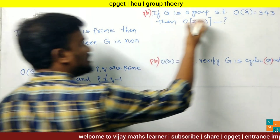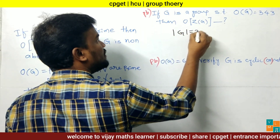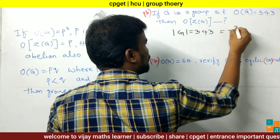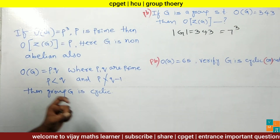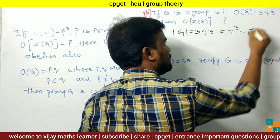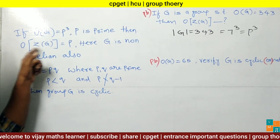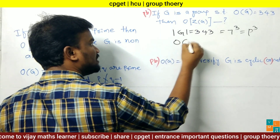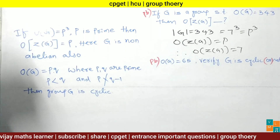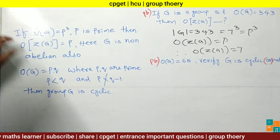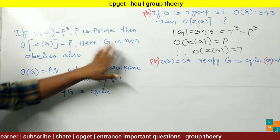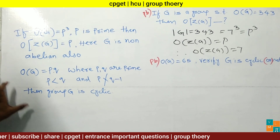First problem: G is a group and the order of the group is 343. Find the order of the center of the group. 343 equals 7³, and 7 is a prime number. Observing that this is in the form P^Q, the prime number here is 7. Therefore, the order of the center of the group equals 7. In this case, G is non-abelian.